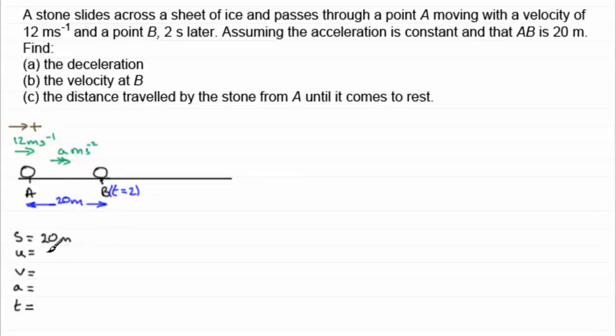U, the initial velocity, well that would be 12 meters per second. The final velocity, well we don't know that at the moment. Acceleration, well we've got to find that. And T, the time, we know that it's 2 seconds. So in order to get the acceleration, we need a SUVAT equation that doesn't involve V. So what's it going to be? Well, the one that we would use would have to be S equals UT plus a half AT squared.